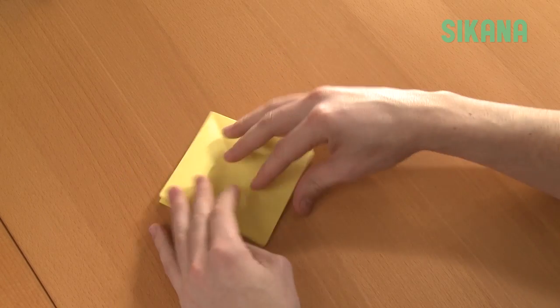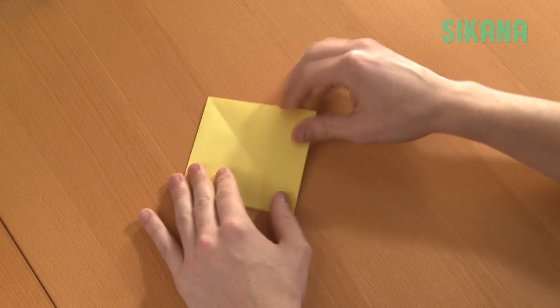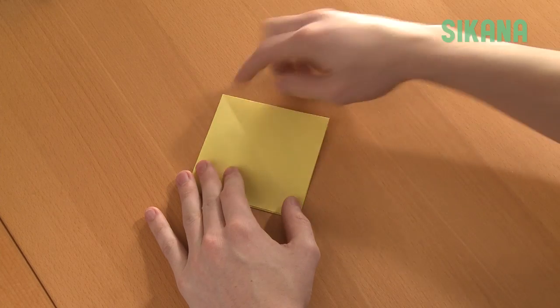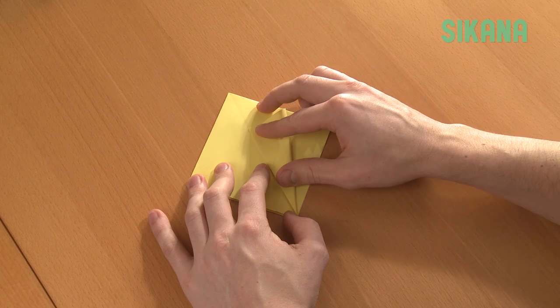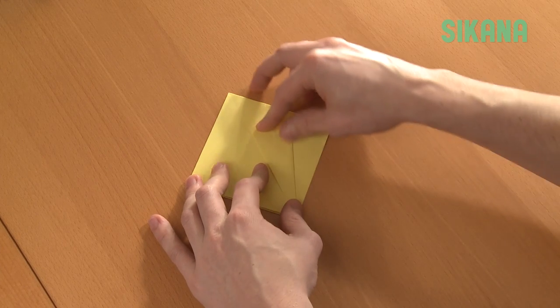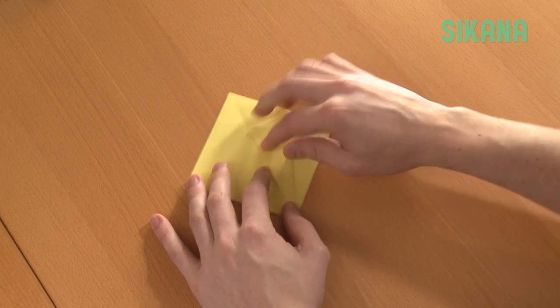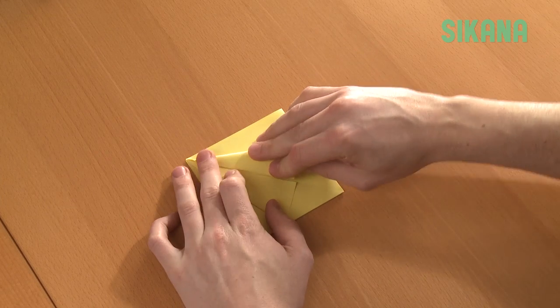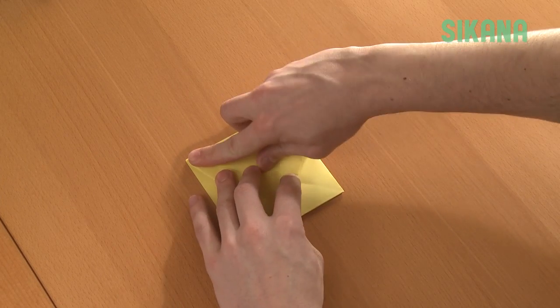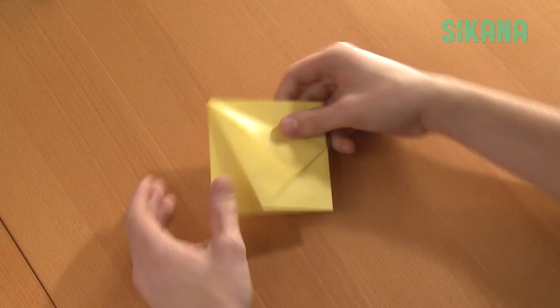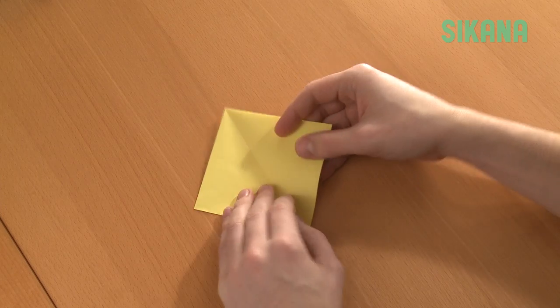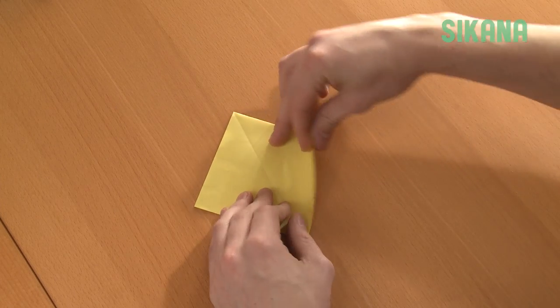The side that opens should be facing downward. Then fold the edge toward the center line. Do the same on the other side. Then turn the paper over and repeat these steps on the opposite side.